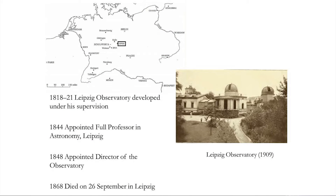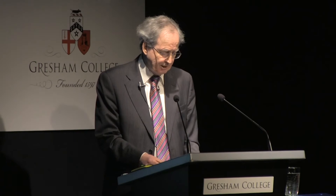Möbius was appointed observer at the university observatory in 1816, and this was his rank for many years, although he was finally promoted to director of the observatory in 1848. Although he spent most of his professional life as an astronomer, he is mainly remembered now for his mathematical discoveries.